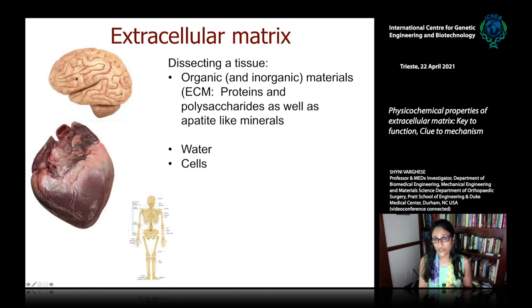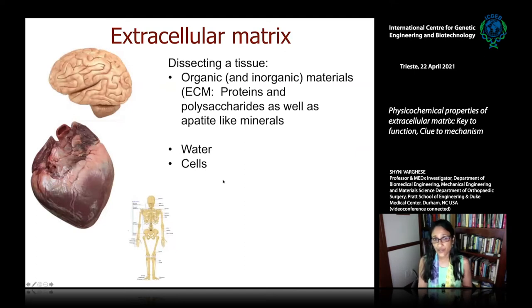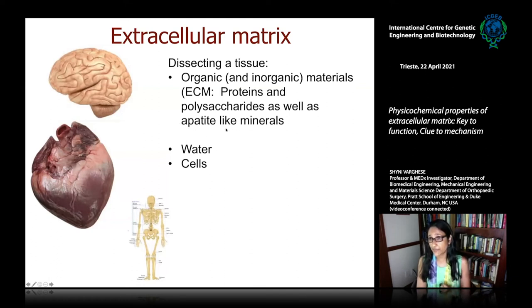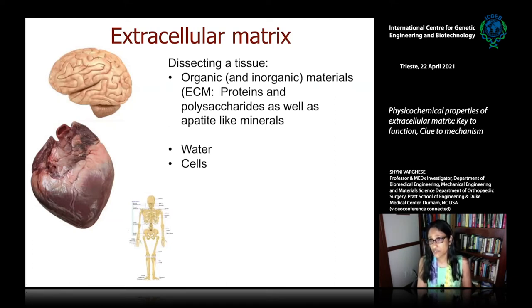Most tissues like brain or heart contain organic components like laminin, collagen, hyaluronic acid, chondroitin sulfate, etc. Now if I go to bone tissue — that is skeletal tissue — I am also going to see apatite-like minerals. That means it is a composite material. Our interest was on apatite-like minerals because there was a unique opportunity to understand how these minerals contribute to tissue homeostasis.